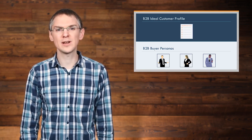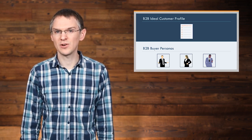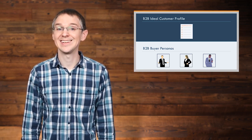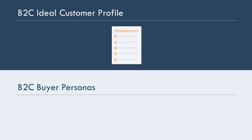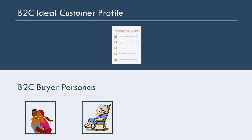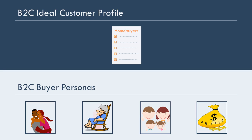Now, if you're in a B2C space, you might be wondering how this applies to you. Don't worry, it definitely does. Your ideal customer profile will be some broad category of people, like prospective home buyers. And then your personas will describe specific kinds of people within that category, such as first-time home buyers, people who are downsizing, people who are upsizing, and investors looking to buy rental properties.